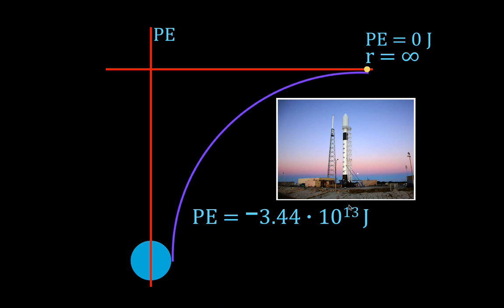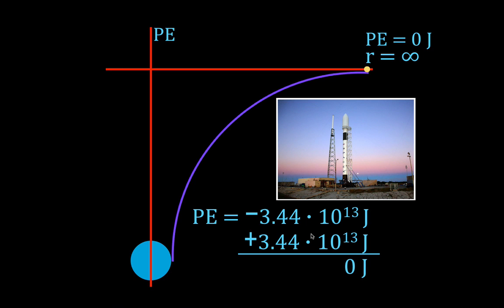What does that negative sign mean? It doesn't mean that the potential energy is less than zero. The magnitude of the potential energy is 3.44 times 10 to the 13 joules. What the negative sign really means is that the object is still bound gravitationally to the Earth — it still feels the influence of Earth's gravity. It's also the amount of energy we would have to add to that object to get it to a place where it had no potential energy. If we want to get it to zero potential energy, we would have to add 3.44 times 10 to the 13 joules, because negative plus positive of the same magnitude equals zero. Zero potential energy means the object is infinitely far away — it's been taken beyond the gravitational influence of the Earth.